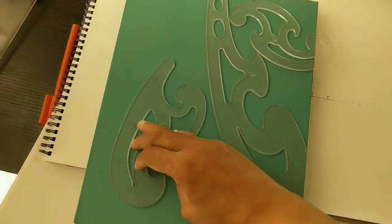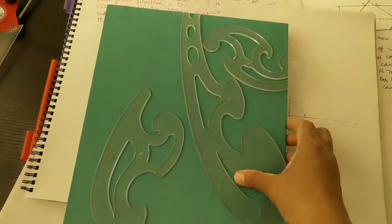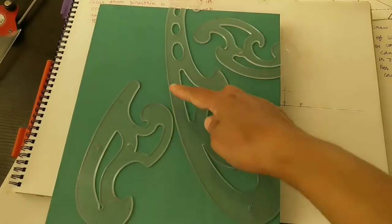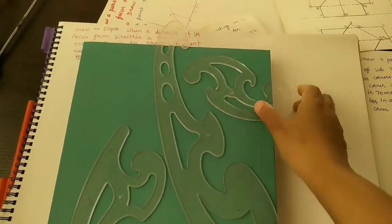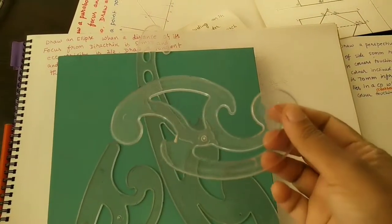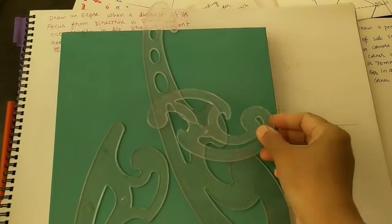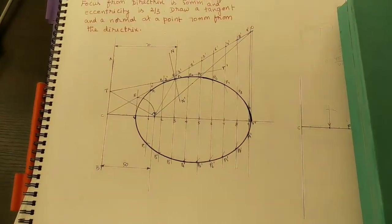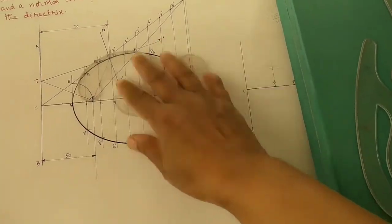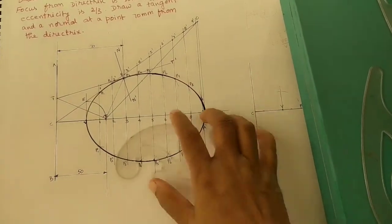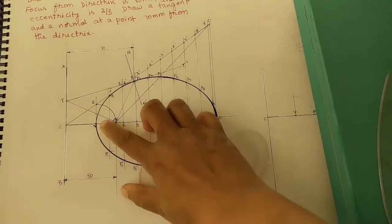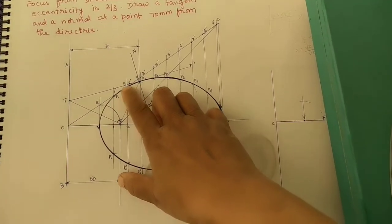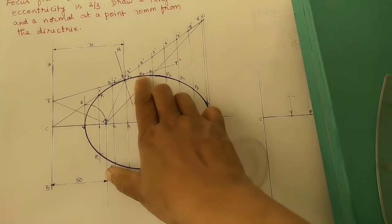Similarly we have a bigger French curve also. This bigger one is used for doing larger arcs. We are using the smaller one for doing the ellipse. We already did some diagrams using these curves. For the ellipse, we take points P1, P2, P3, P4 and so on.